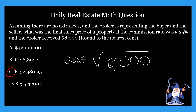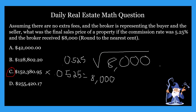Now, a great way to double check is you can actually take this number and multiply it by 0.0525, and that's going to give you that $8,000 back — which is a great way to double check on these commission problems.